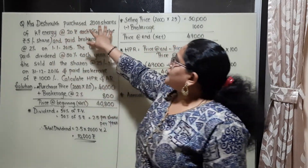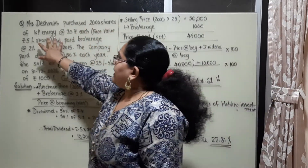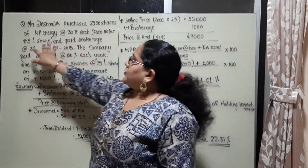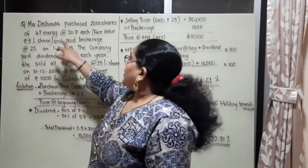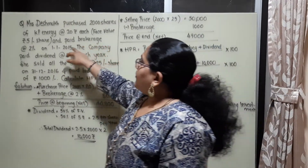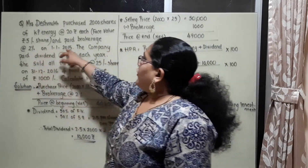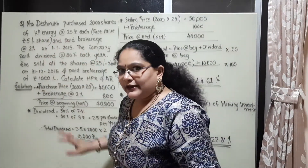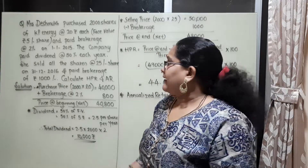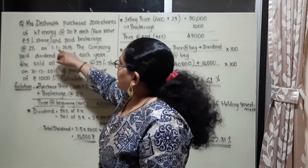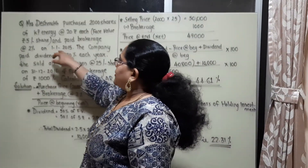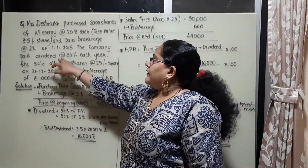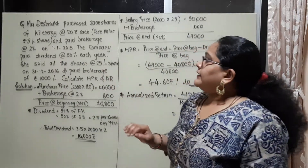Mrs. Deshmukh purchased 2000 shares of KP Energy at a rate of 20 rupees each. The face value of that share is rupees 5 per share, and she paid a brokerage of 2% on 1st January 2015 — that is the purchase date when she made the investment. The company paid dividend at a rate of 50% each year.